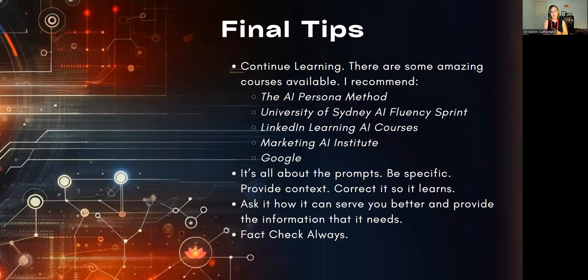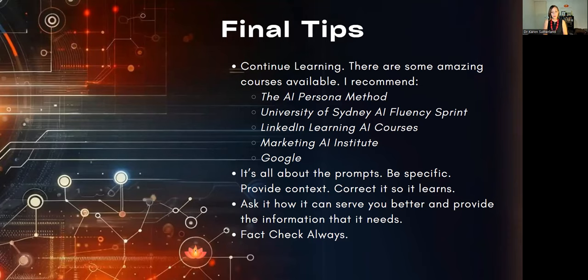Google also has a whole suite of free generative AI courses worth a look. Remember, when you're using AI, it's all about the quality of data you put in and the prompts and instructions you give. Be very specific and provide a lot of context to get what you need. When it's not giving you what you need, correct it and tell it what it's done wrong. And ask it what it needs from you — you can even say 'I want to do this, what do you need from me to perform the task?' and it will rattle off everything it needs.